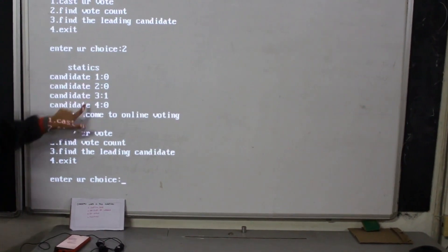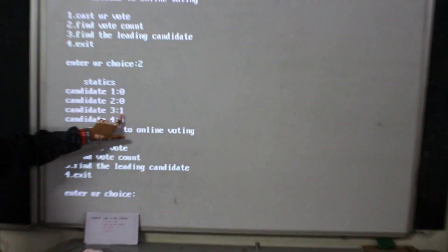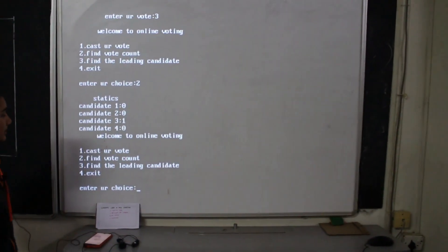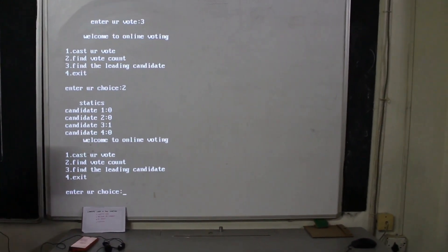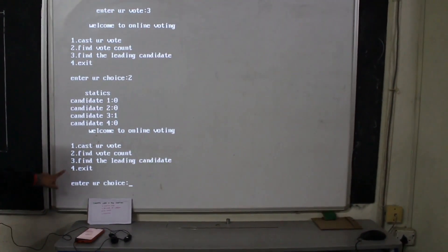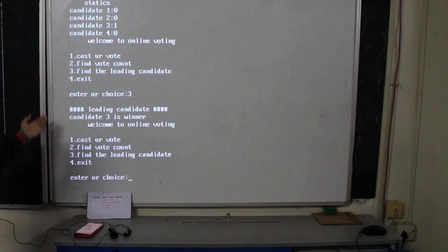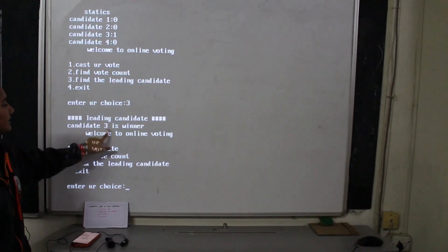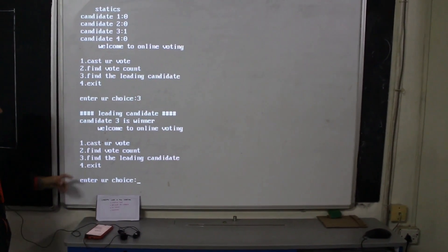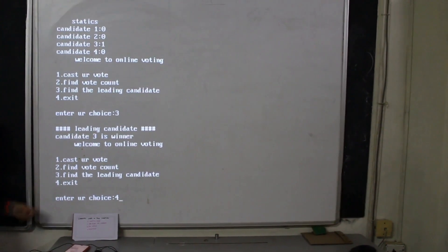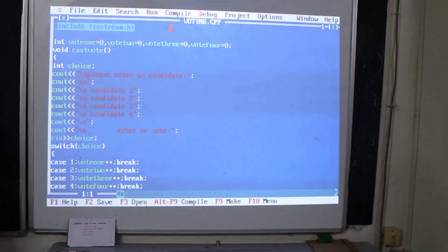If I want to see the vote count, I enter 2 and Candidate 3 shows 1 vote. To find the leading candidate, I select option 3 and enter, and the result shows that Candidate 3 is the leader. Finally, I go to the exit option and the program exits.